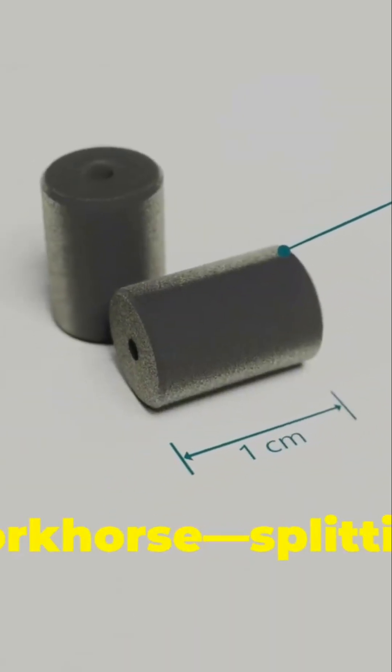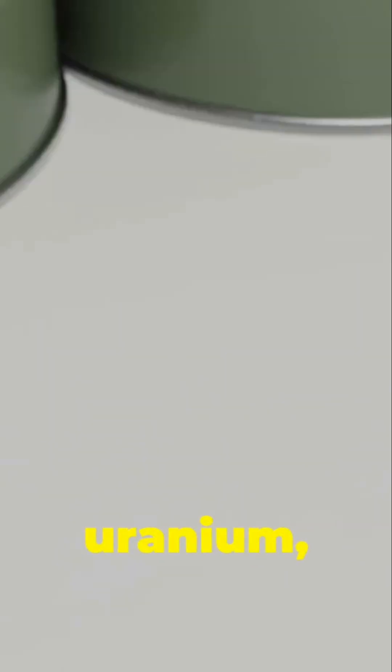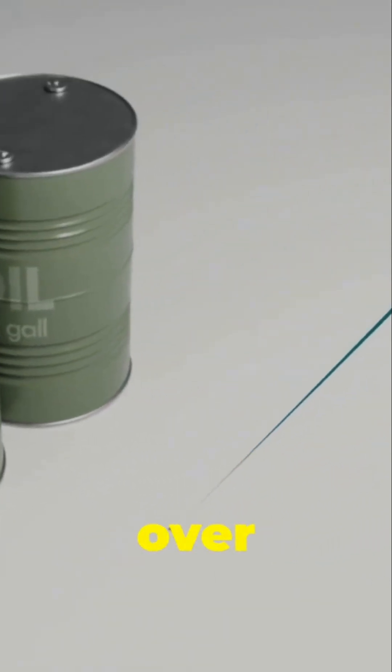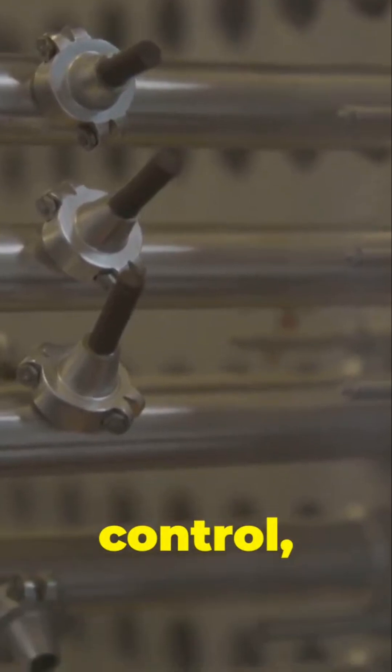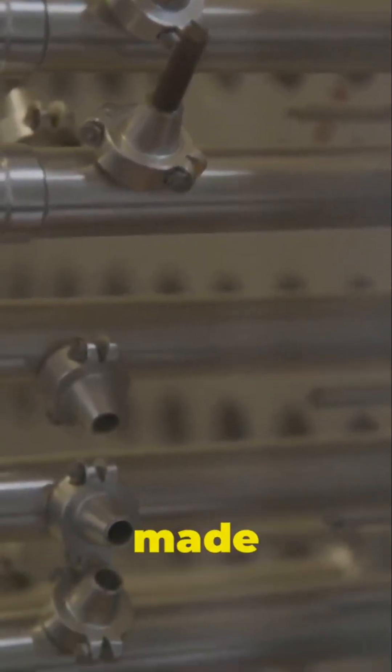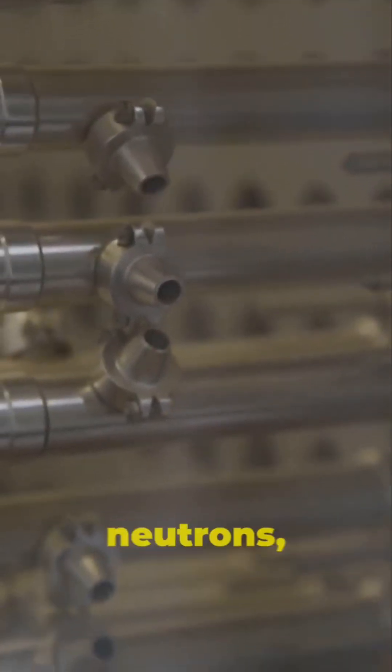That's our current workhorse, splitting heavy atoms like uranium, a process that's been refined over decades. To keep this reaction under control, nuclear reactors use control rods made of materials that absorb excess neutrons, preventing the reaction from running wild.